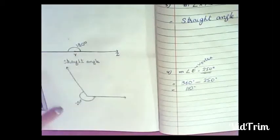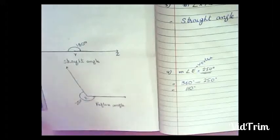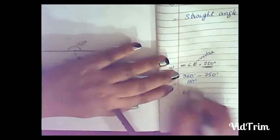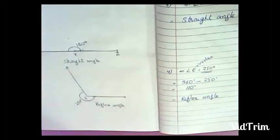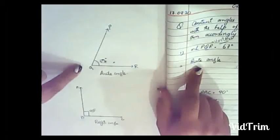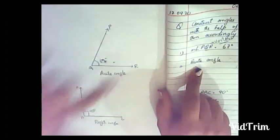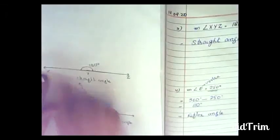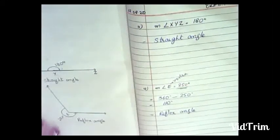So the 250-degree angle is on this side, and this is your vertex E. The 250-degree angle is basically the reflex side of the 110-degree angle. The answer is that this is a reflex angle. Make sure to write down the question, construct the angle with a pencil, write the name, and label accordingly — just as shown with PQR, ABC, XYZ, and E.